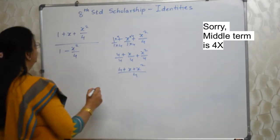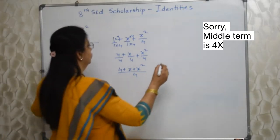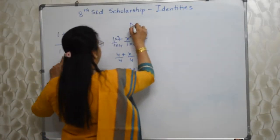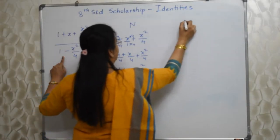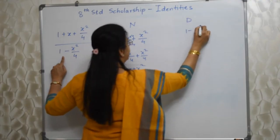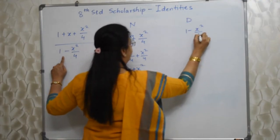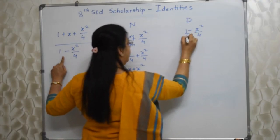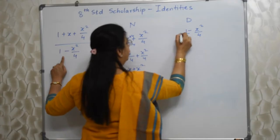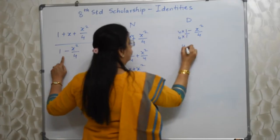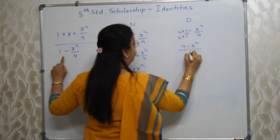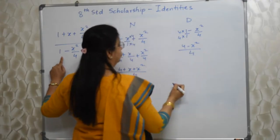Now let's go to the denominator. Denominator is 1 minus x² upon 4. Multiplying by 4 gives us 4 minus x² upon 4.